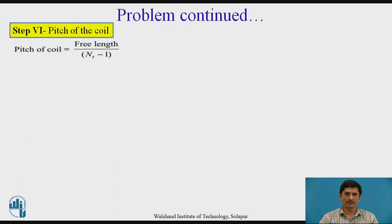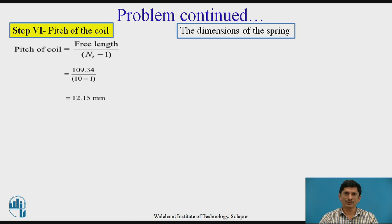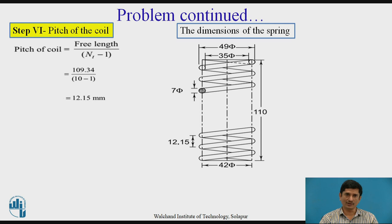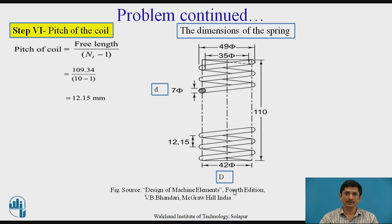Then, pitch of the coil, it is free length upon NT minus 1, which is given as 12.15 millimeter. Then, the dimensions of the spring. As we are asked to draw the spring and calculate the dimension, let us draw the spring. All the dimensions are mentioned: the wire diameter, then the mean coil diameter, then the inside diameter 35, outside diameter 49, then total free length and the pitch of the coil.